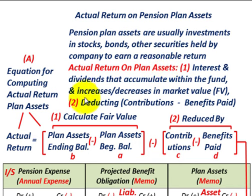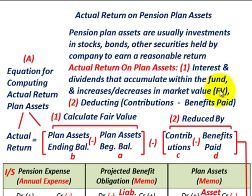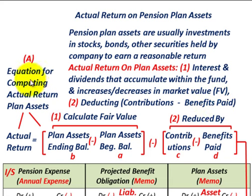The actual return is really composed of two different components. We have the interest and dividends that accumulate within the fund and any increases or decreases in the market value of those securities — their fair value — and then we're going to have to deduct the difference between the contributions made to the pension fund less the benefits paid. This is our general equation for computing the actual return on our plan assets.